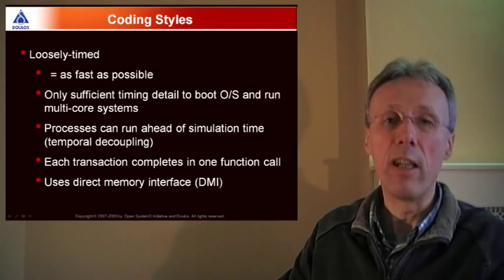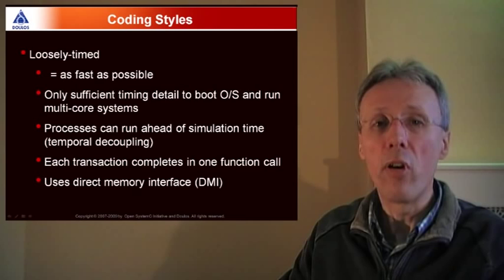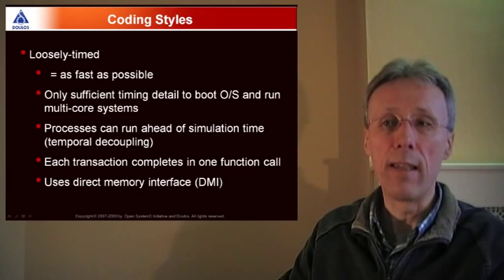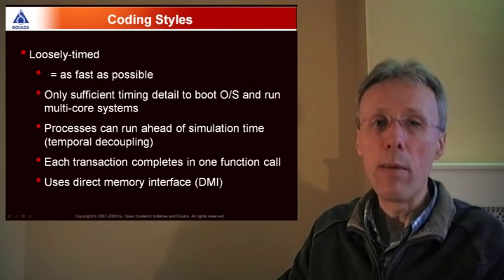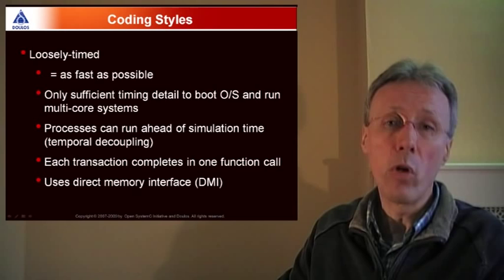In order to achieve as fast as possible simulation, there are two primary tricks in use, temporal decoupling and DMI or the direct memory interface. So temporal decoupling refers to allowing SystemC processes to run ahead of simulation time, and by doing so to minimize the amount of context switching that occurs during a SystemC simulation. And that has a significant impact on simulation speed.